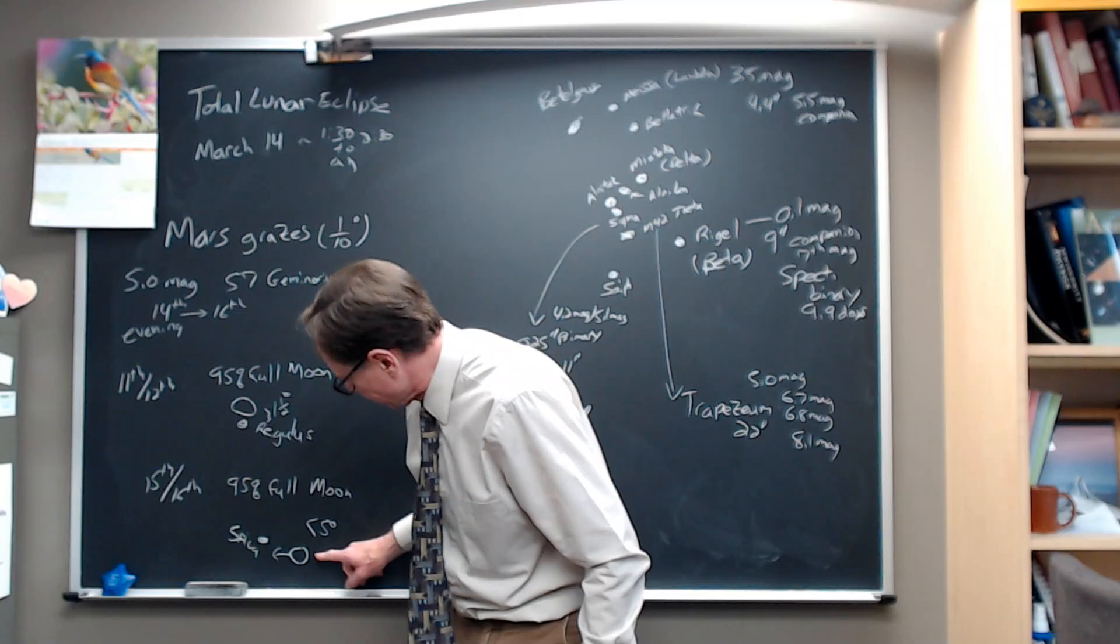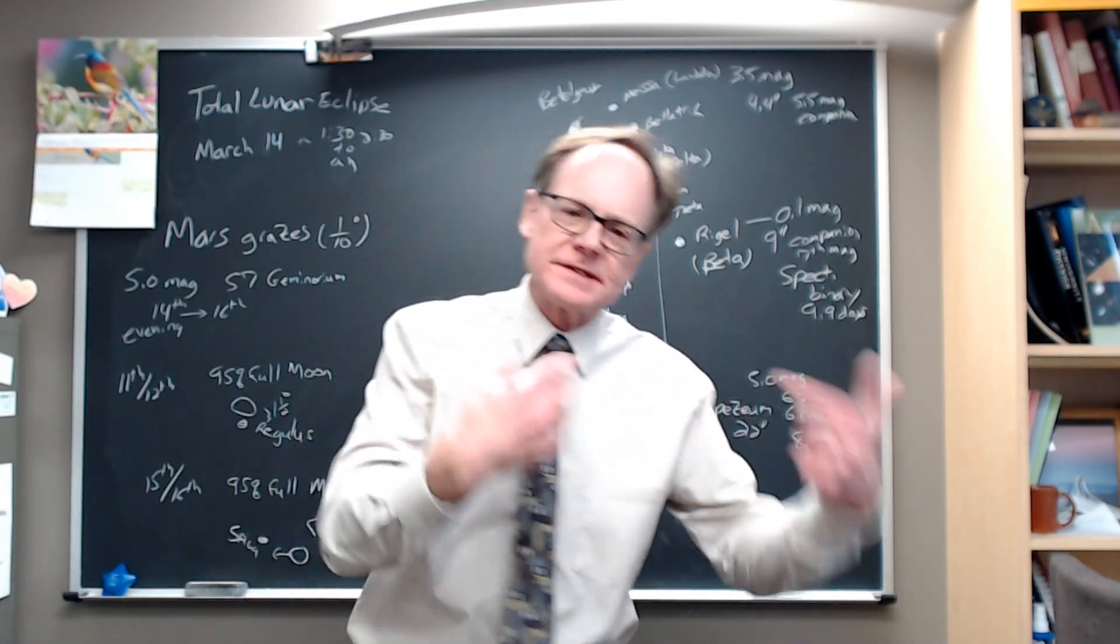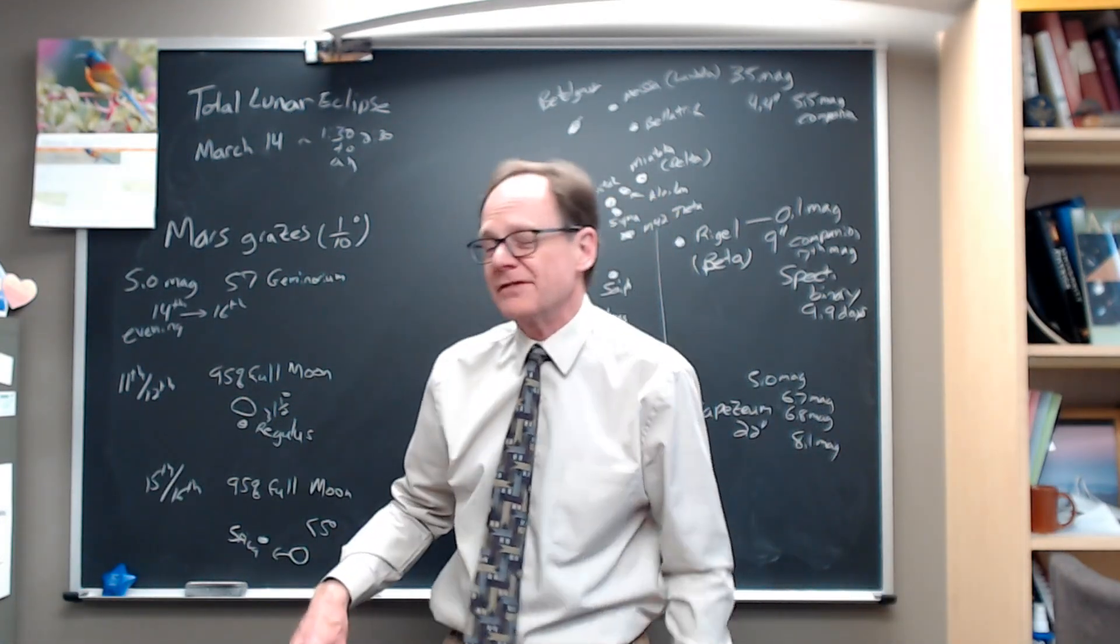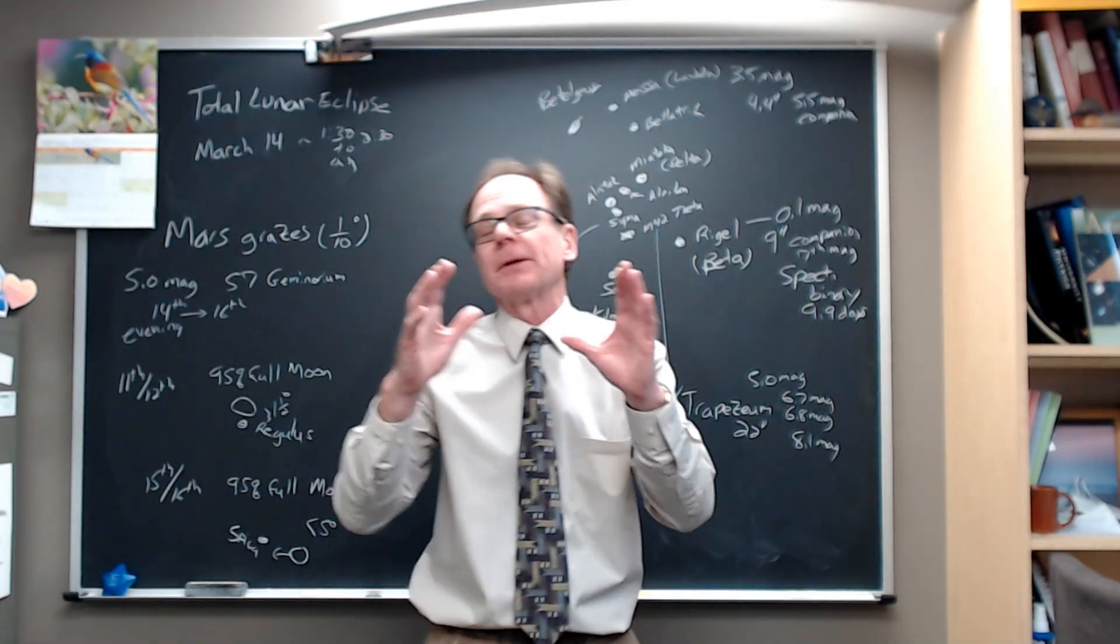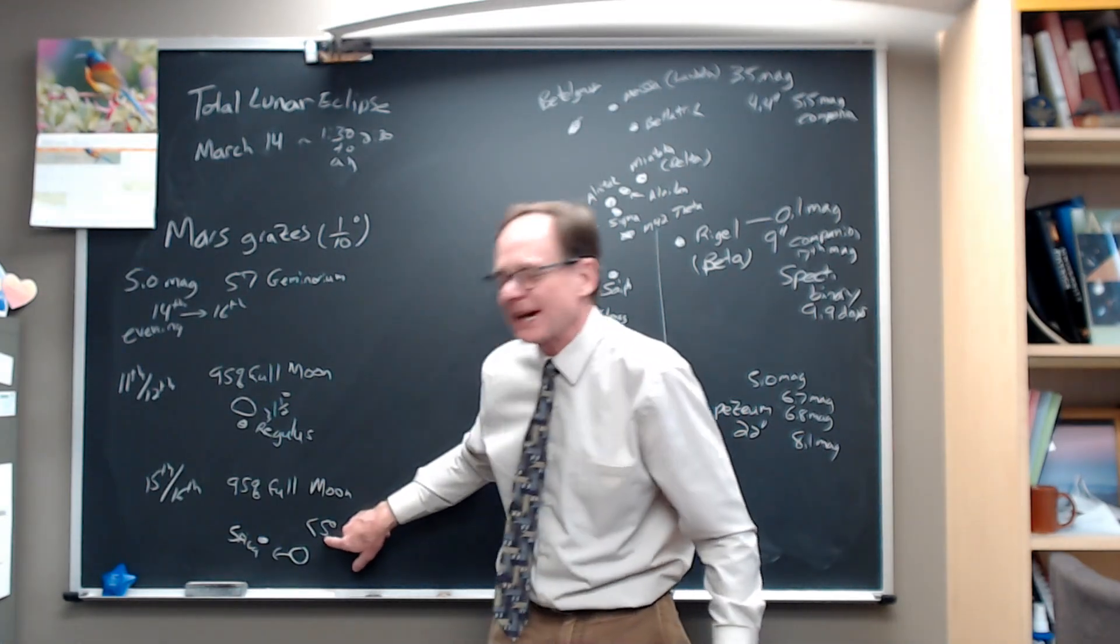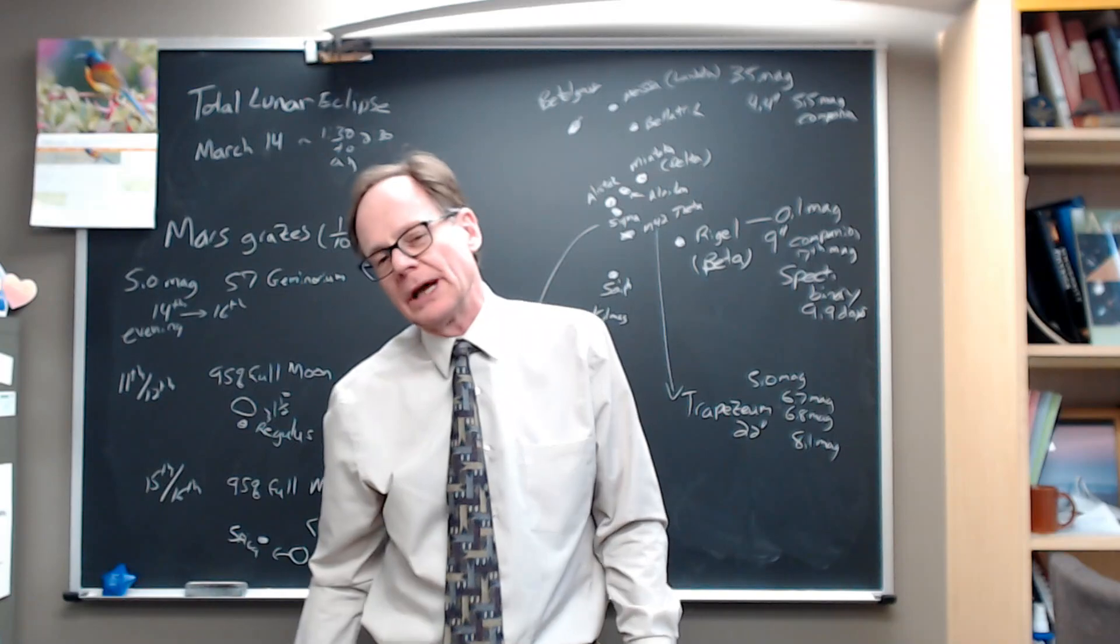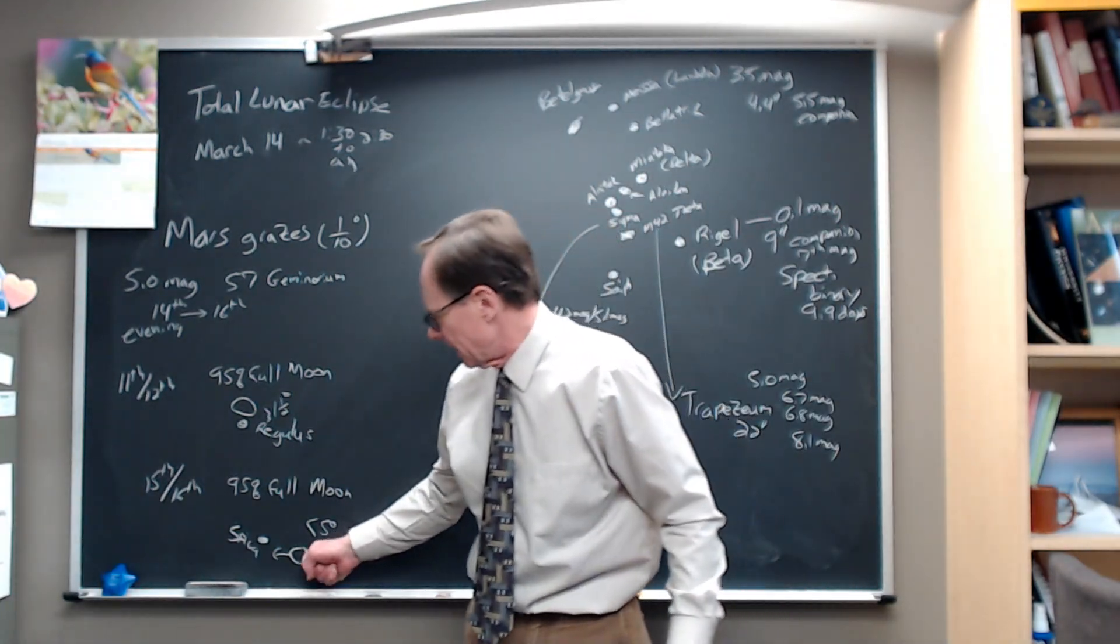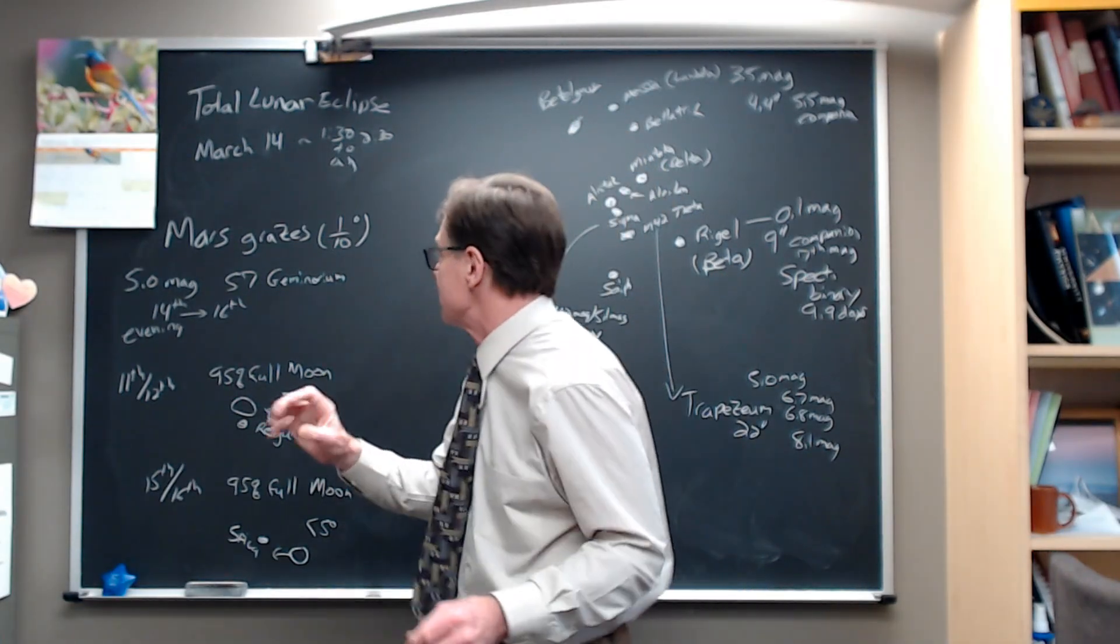And it approaches Spica. For me, again, here in the central part of the United States, as it approaches Spica, the bright star in Virgo, below the other end of Leo, below Denebola that marks the triangle tail of Leo, we're approaching Spica. It'll get to within about five degrees of Spica before it gets too light to see for me. If you're further west, you'll get to see the moon approach Spica more closely. So that's what we got moon-wise this week.